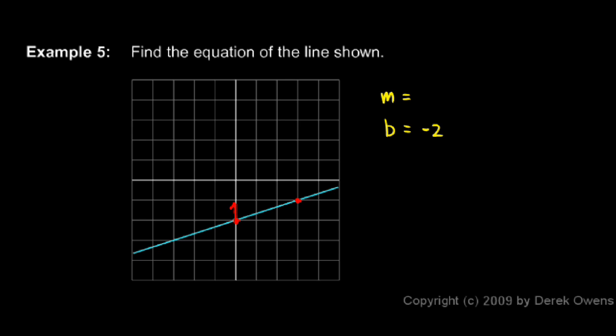From this point, we go up 1 and over 3 to get to the next point. So our slope is the rise over the run, that's 1 over 3.